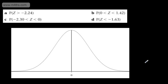In this video, we're going to continue our work looking at finding probabilities using the standard normal distribution. All we're doing is carrying on with our work and looking at a few more examples. First one, we're asked to find the probability that Z is greater than negative 2.24.